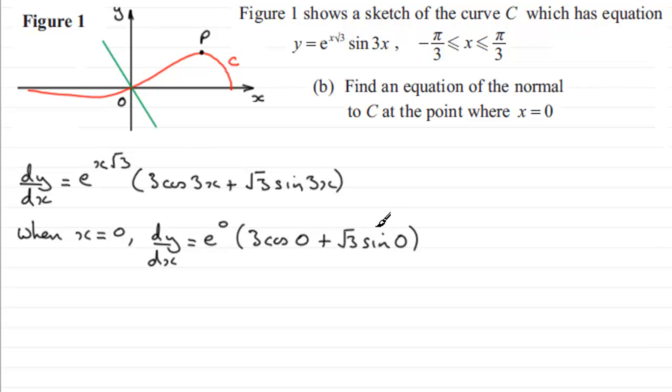e^0, anything to the power 0 is 1. The cosine of 0 radians is going to be 1 as well. The sine of 0 radians is 0, so this term disappears. We're just left with 3 times 1, which is 3. So we've got the gradient of the tangent here, which would be 3.